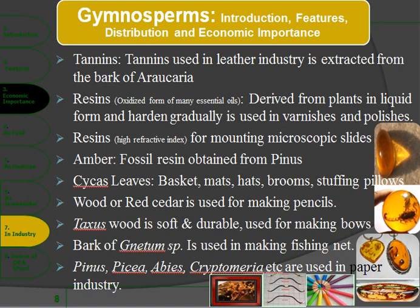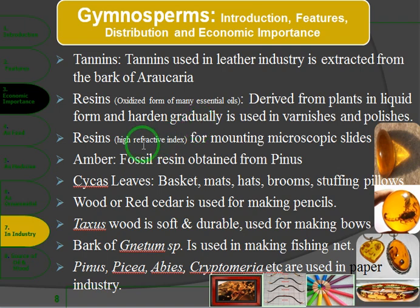As by-products, gymnosperms yield tannin used in the leather tanning industry. They also produce resins — oxidized forms of essential oils derived from plants in liquid form. When these harden gradually, they can be used in various ways. They are also used as microscopic mounting medium for slides.